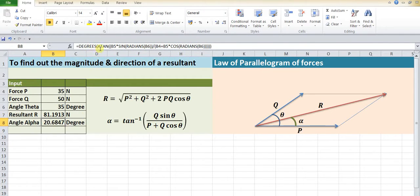Similarly, here also the angle alpha, which we want in degrees, is tan inverse, that is arctan, of Q sine theta divided by P plus Q cos theta. So in this way we can use this particular simple Excel calculator to find out the resultant using the law of parallelogram of forces.